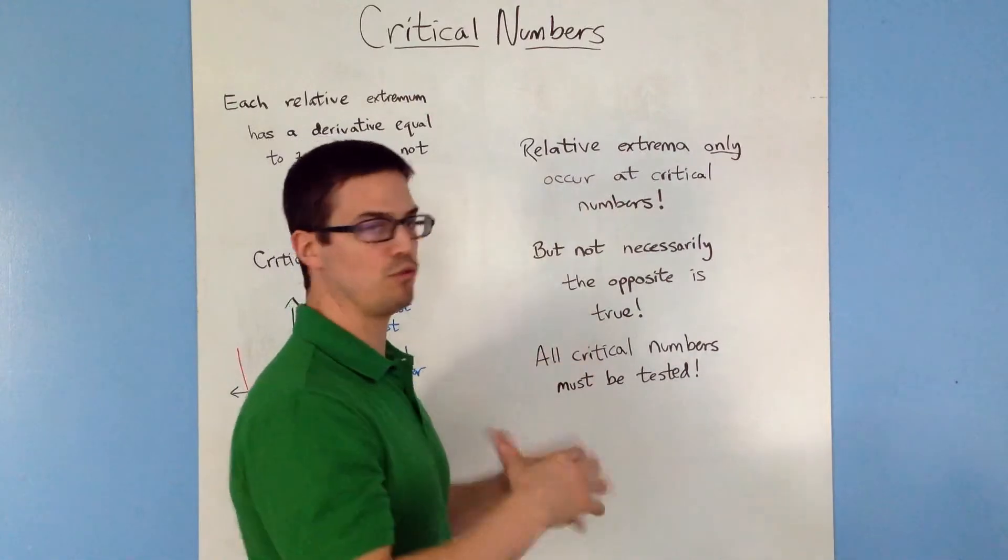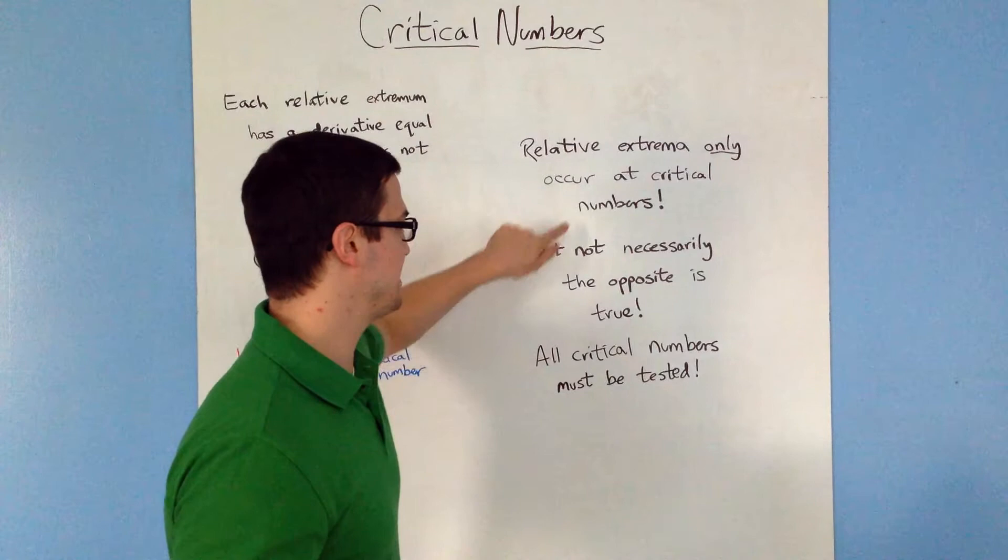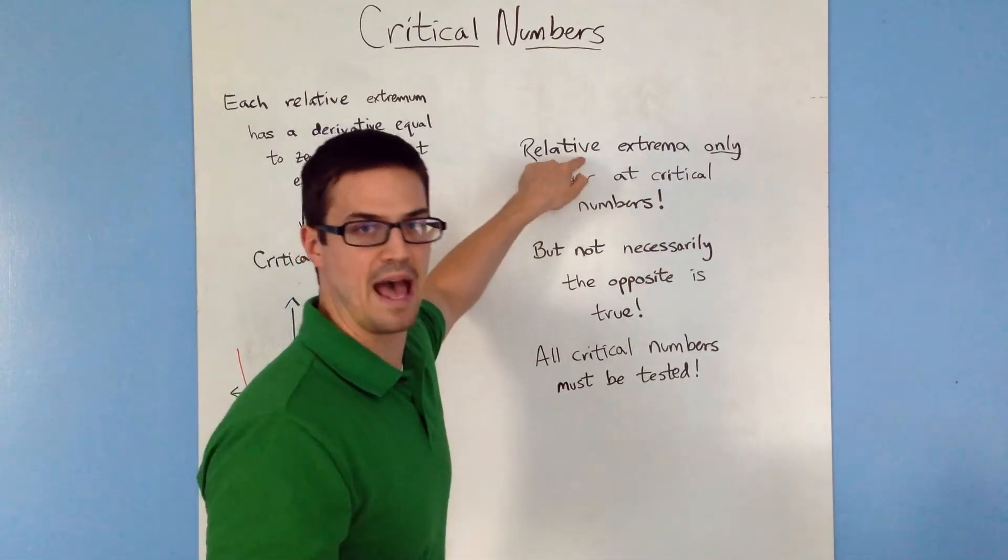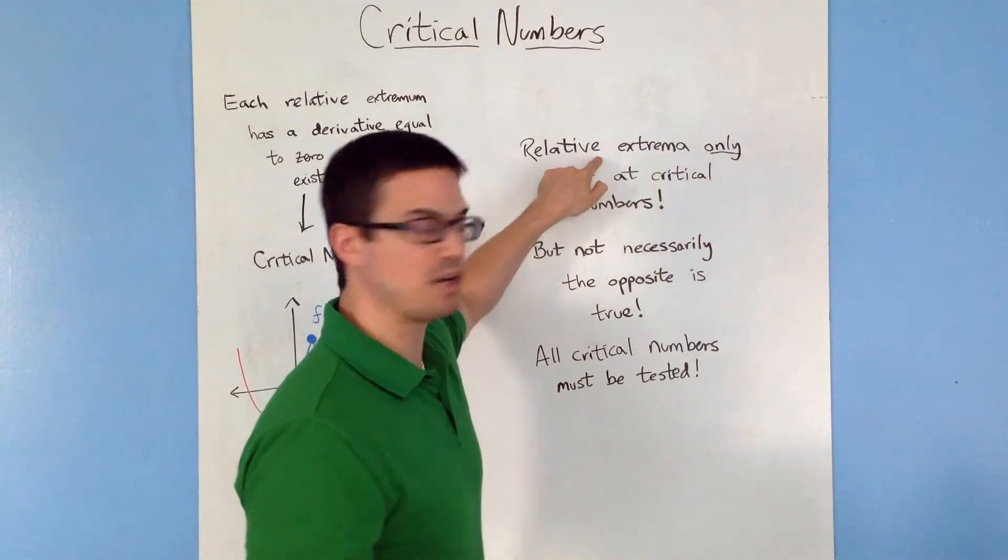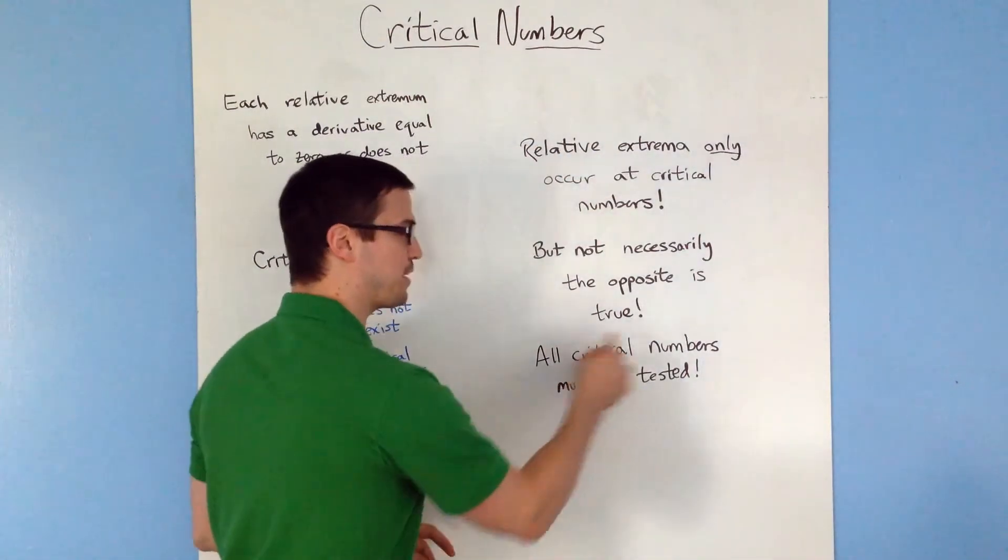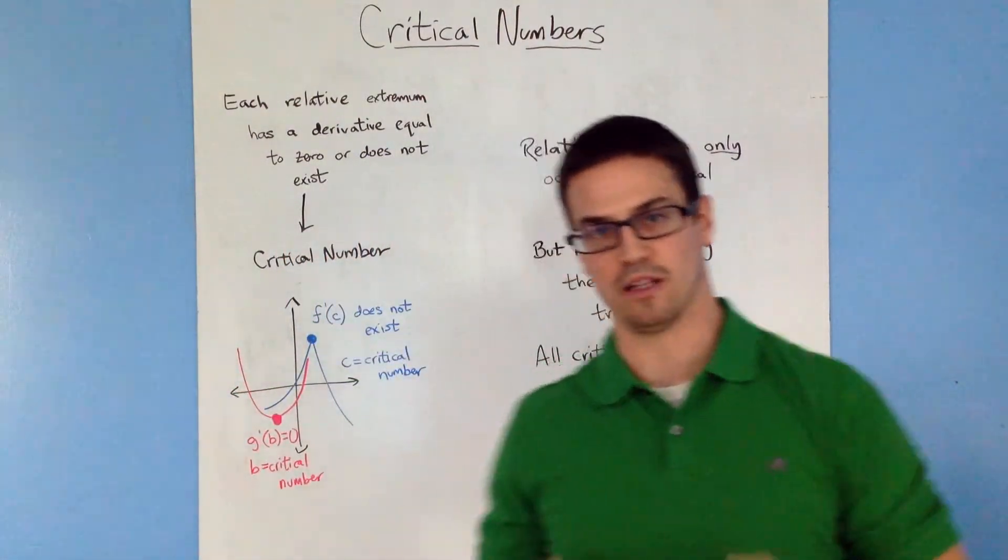So relative extrema can only occur at critical numbers. However, the opposite is not true. Not every critical number is necessarily a relative min or max. Every relative extrema has a critical number but not the opposite. So every critical number has to be tested to determine whether it actually is a relative extrema.